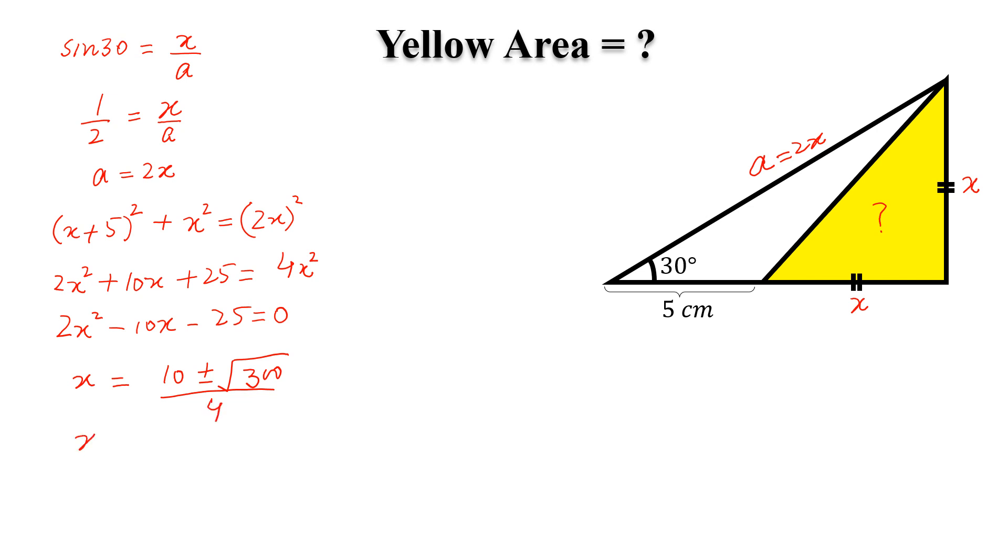And if we simplify this, we will get x equal to (5/2)(1 ± √3), and we will choose x equal to (5/2)(1 + √3).